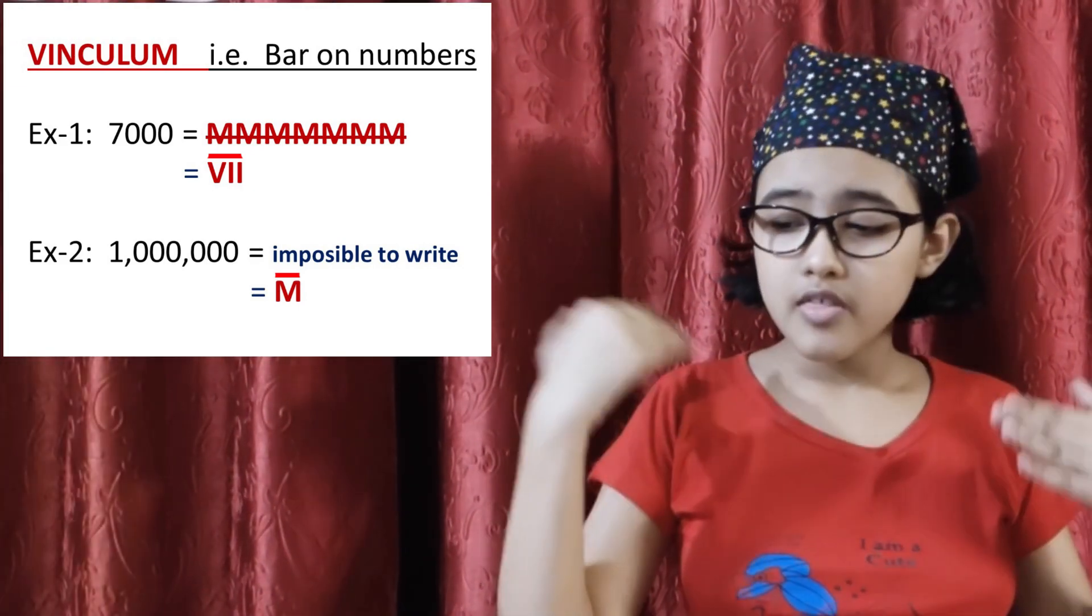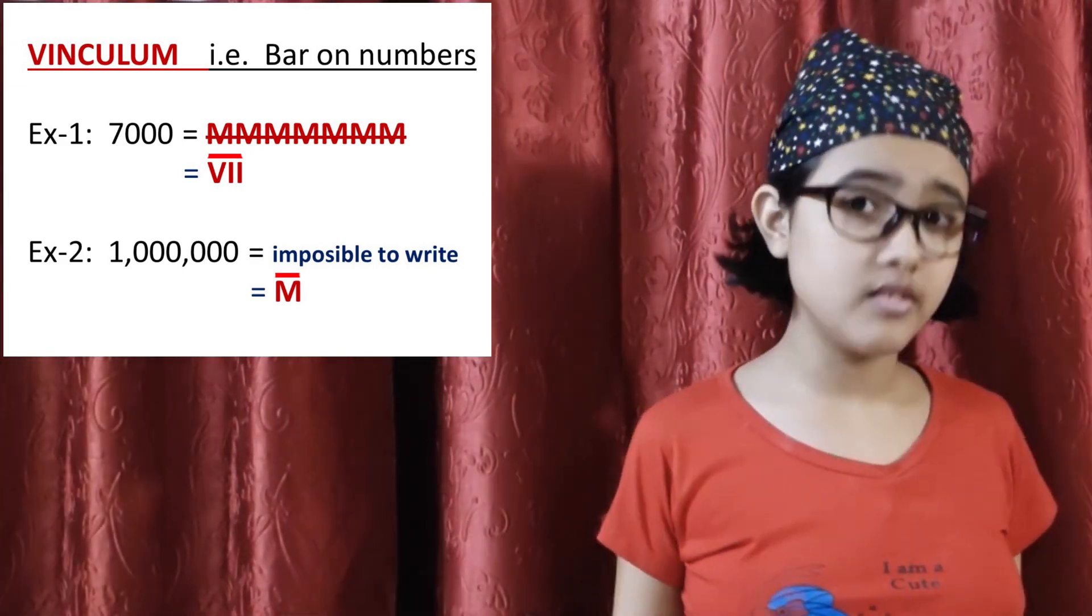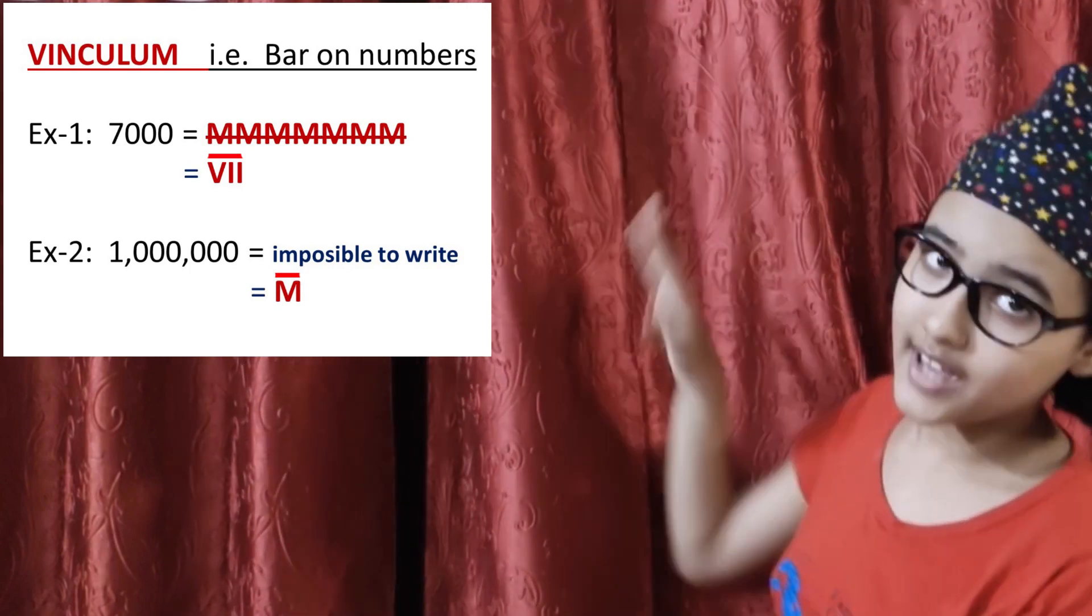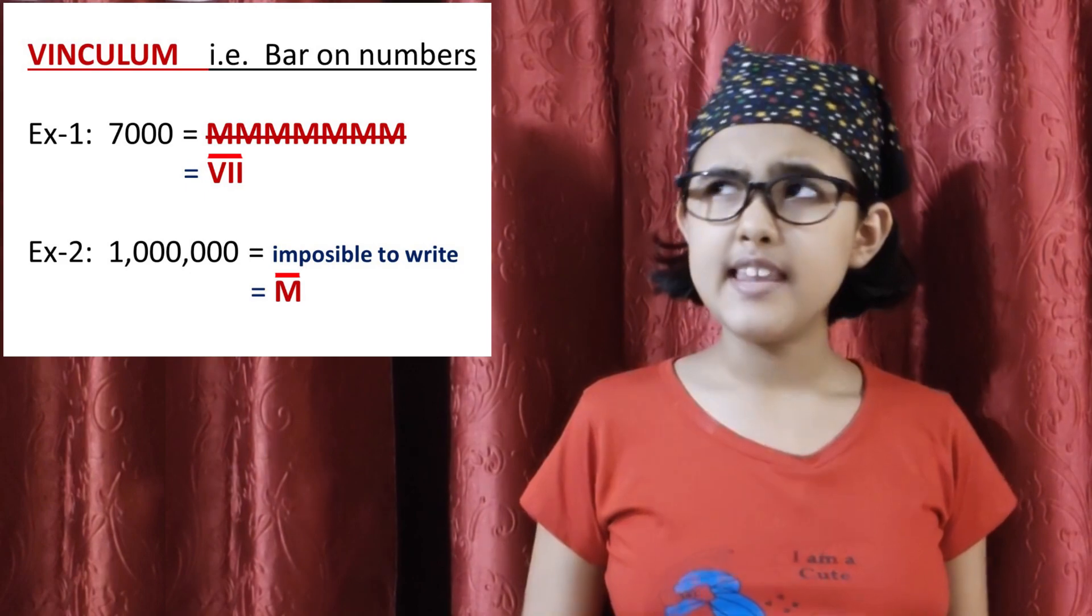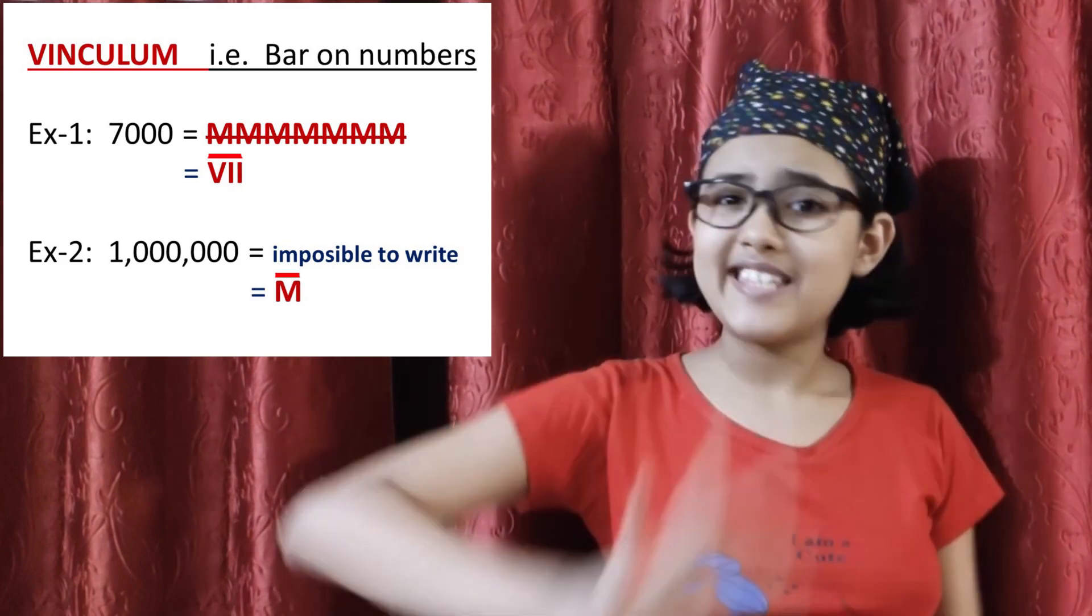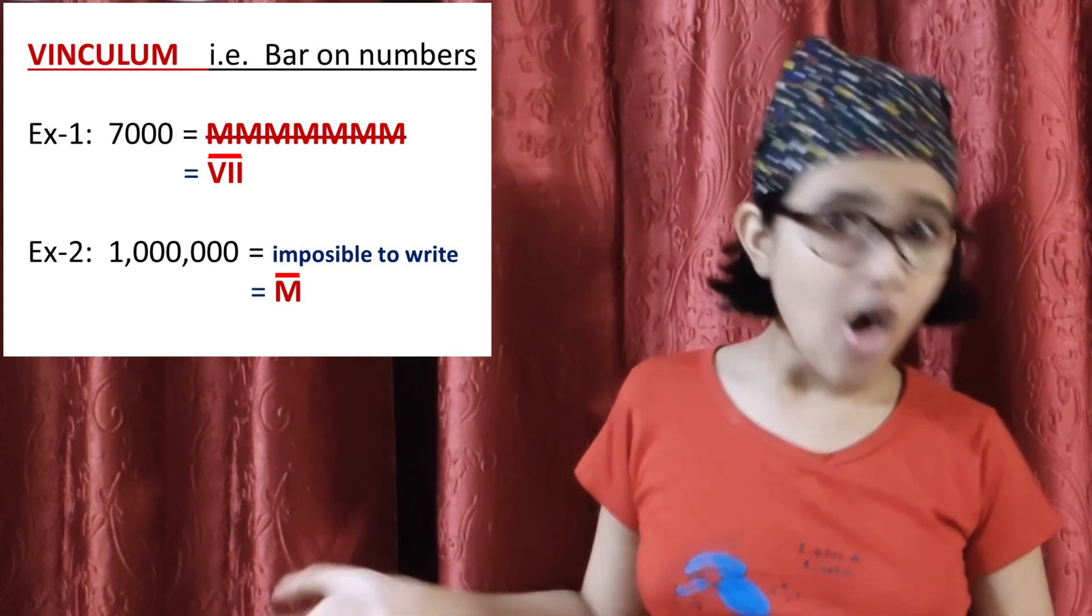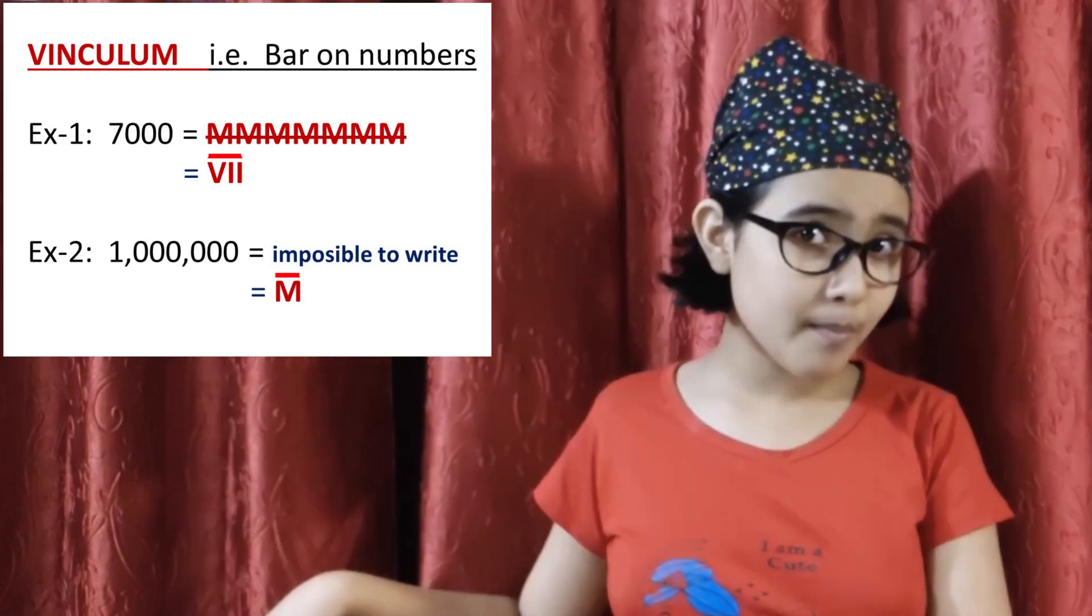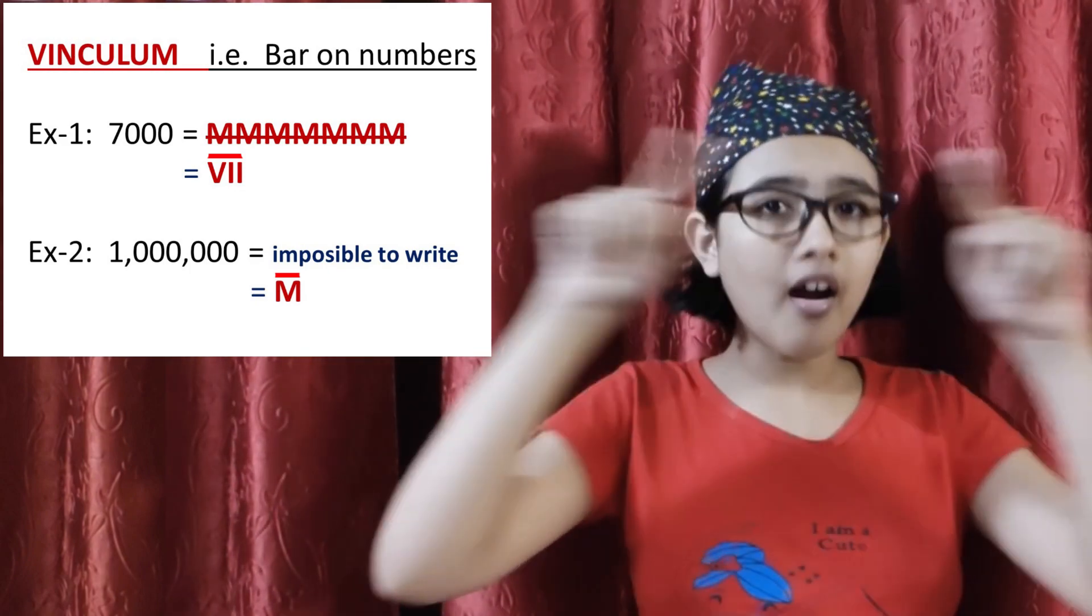So the number for 7,000, I hope you've got it. You can see here how to write it with VII and a bar. Now how to write 10 lakh? So M with a bar on the top is 1 million. That's simple.